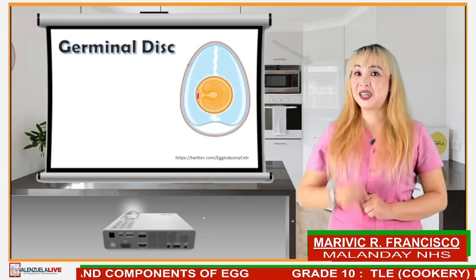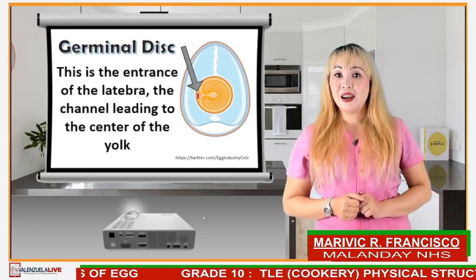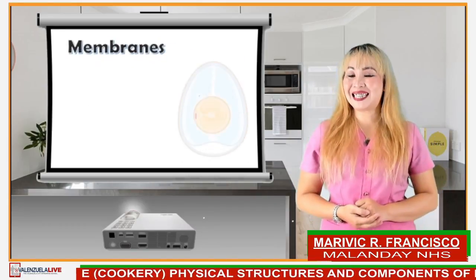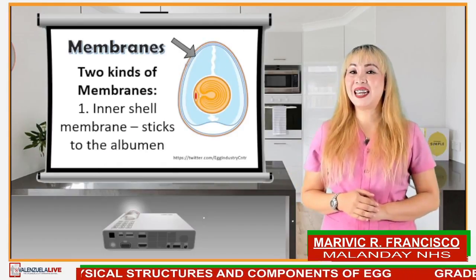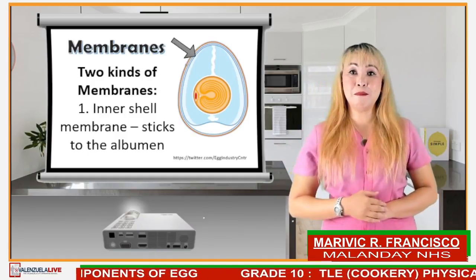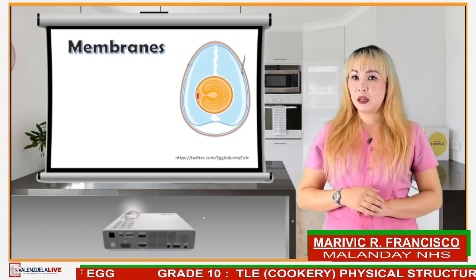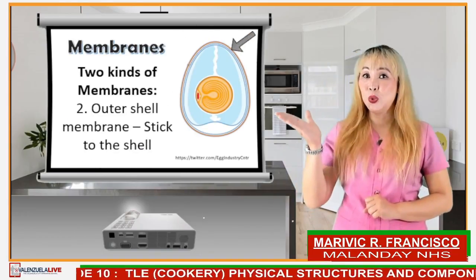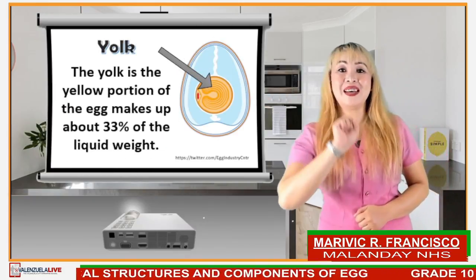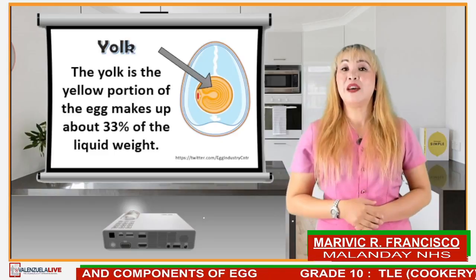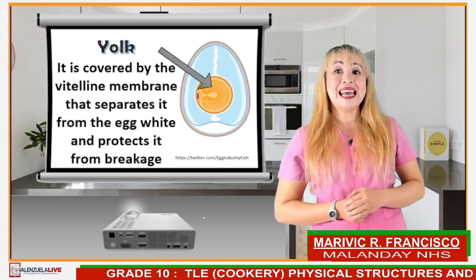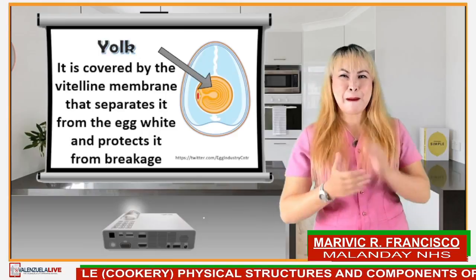The germinal disc is the entrance of the lateral branch, the channel leading to the center of the egg yolk. The membranes — there are two types: the inner shell membrane and the outer shell membrane. The inner shell membrane sticks to the albumin, while the outer shell membrane sticks to the shell. The yolk is the yellow portion of the egg that makes up about 33% of the liquid weight of an egg. It is covered by the vitelline membrane that separates it from the egg whites and protects it from breakage.